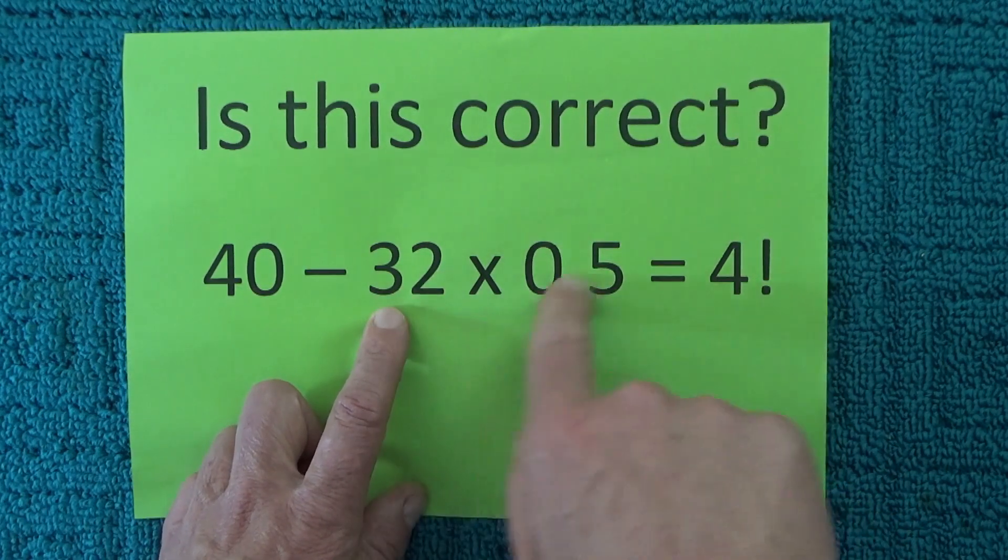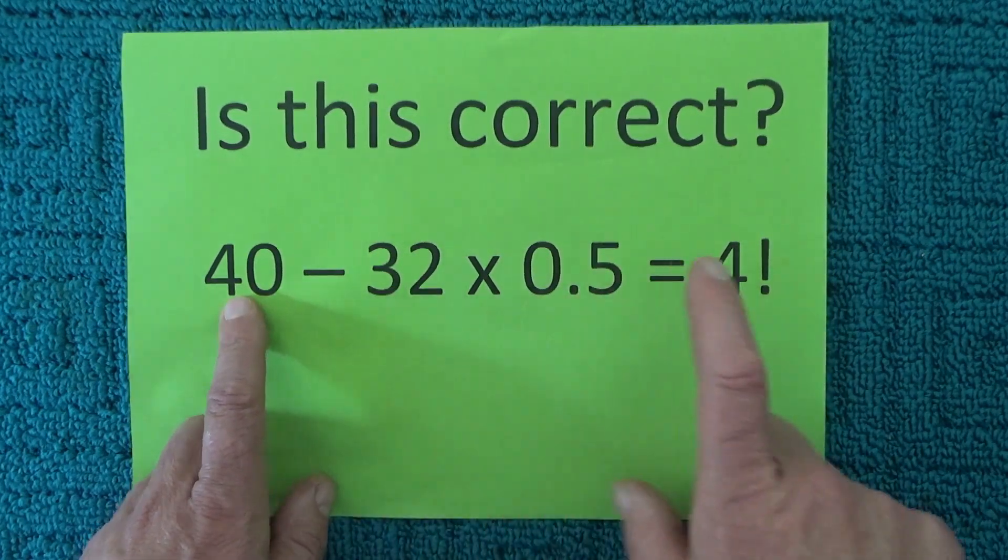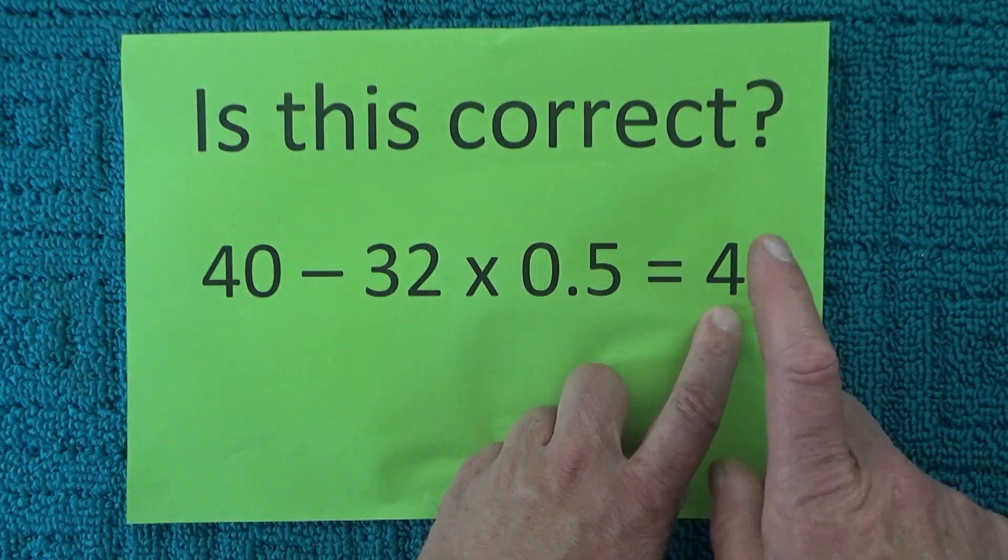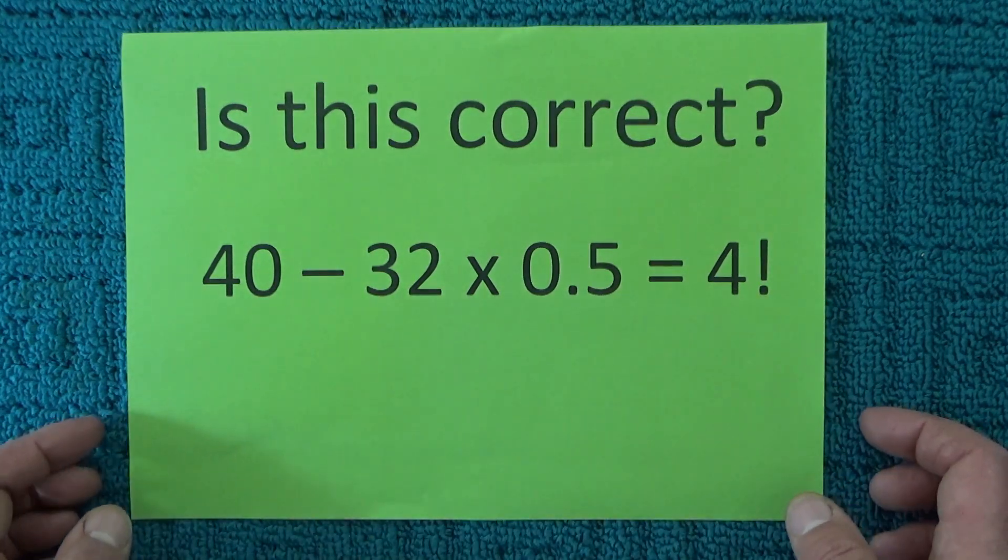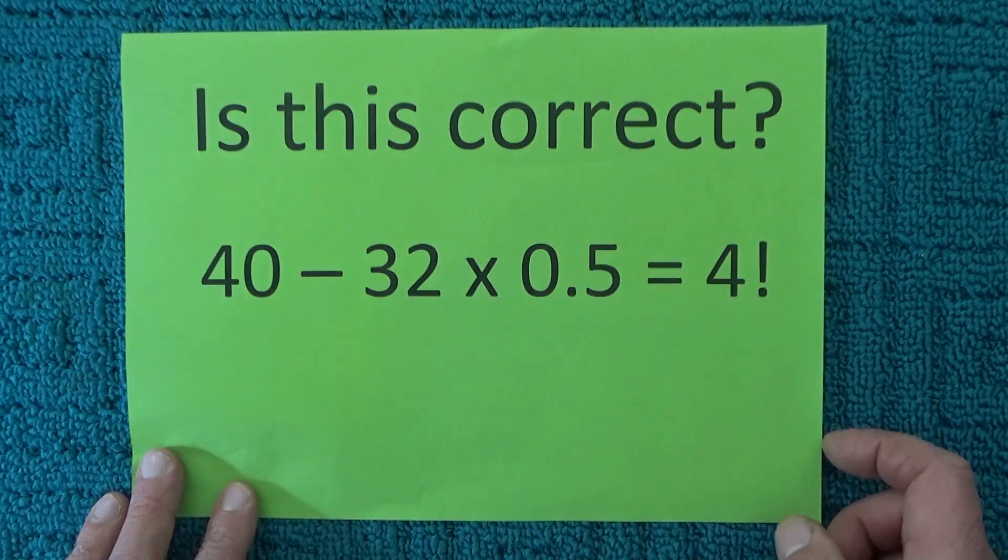So actually the answer is correct because that's 16, 40 minus 16 equals 4 exponential, which is also equal to 24, so this equation is actually correct.